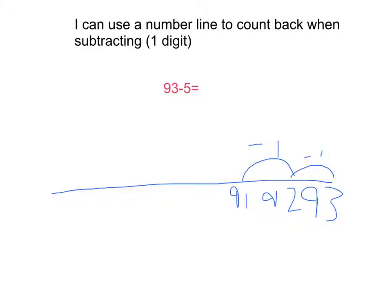You have 3 left to subtract now. So 91 take 1 is 90.